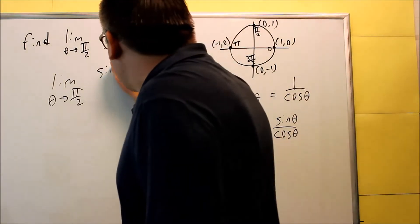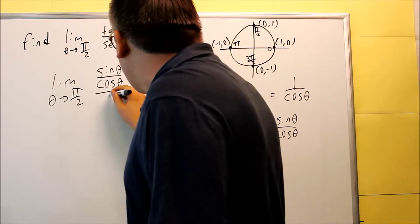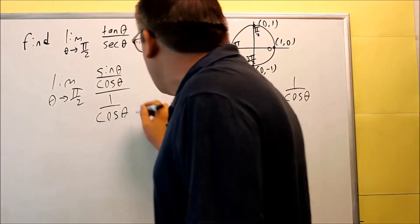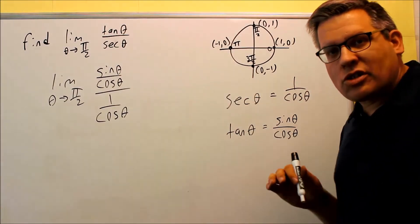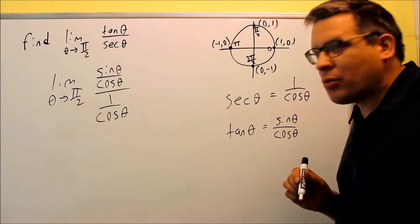So I'm going to write it out that way. So on top, I have sine θ over cosine θ. On the bottom, I have 1 over cosine θ. So I need to use these identities to plug in because I want to make this simpler and cancel out the part that's causing the problem here.